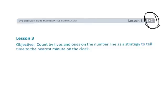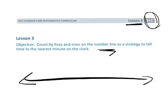This is Grade 3, Module 2, Lesson 3, and we're going to be continuing telling time. We're going to be using a number line to assist us. A number line with time is going to be particularly valuable to solve elapsed time and interval times, and that's why we want to teach students how to use the number line, because this is going to be a prerequisite for future lessons where kids are going to be asked to solve some pretty challenging time questions.